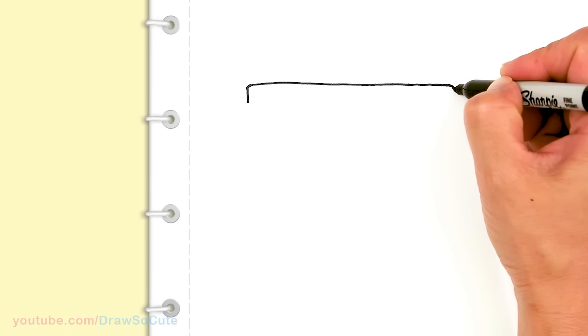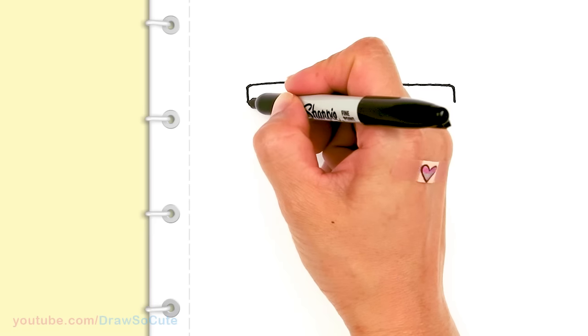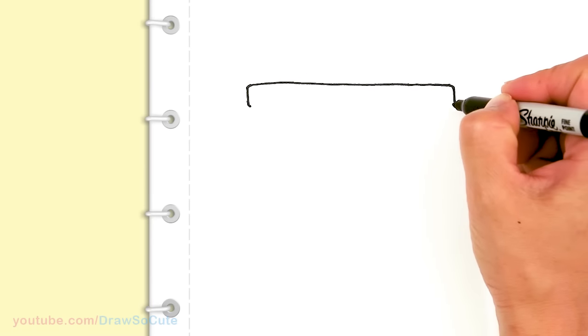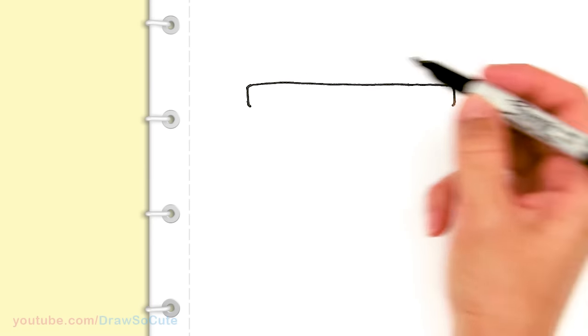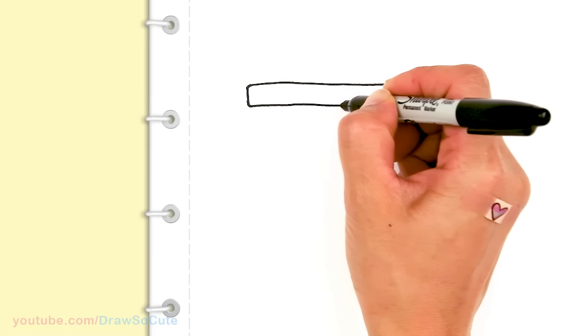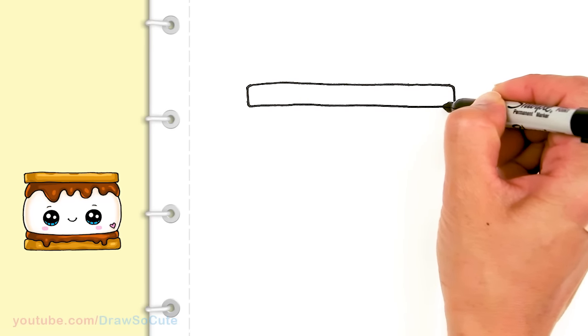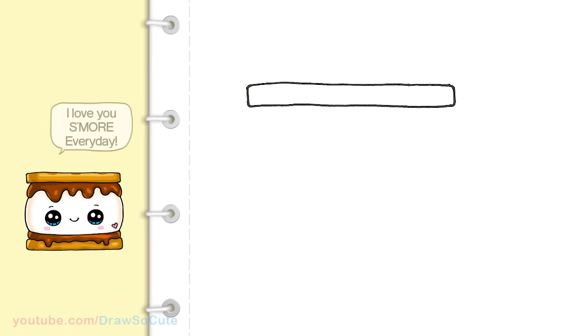Just a tiny bit roundish, straight line down. And then same thing on this corner. Just a little bit and then go ahead and connect it all the way across. So we've got the top cracker in.